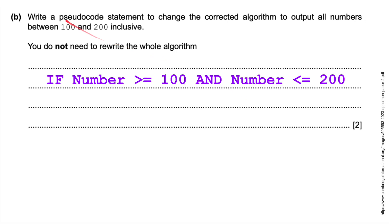Question six: write a pseudocode statement to change the corrected algorithm to output all numbers between 100 and 200 inclusive. You do not need to rewrite the whole algorithm. I've just put it in here. If the number is greater than or equal to 100 and the number is less than or equal to 200. If you pop that in, that would work fine. That's enough.